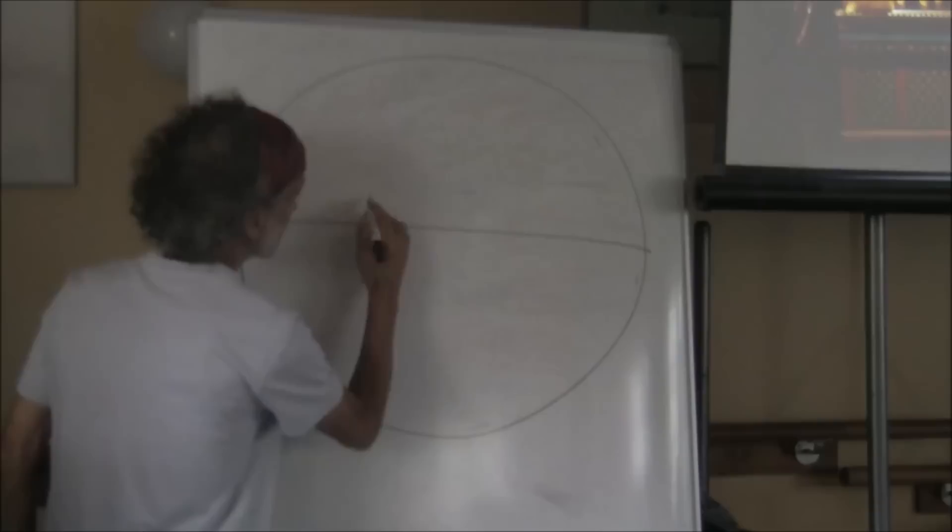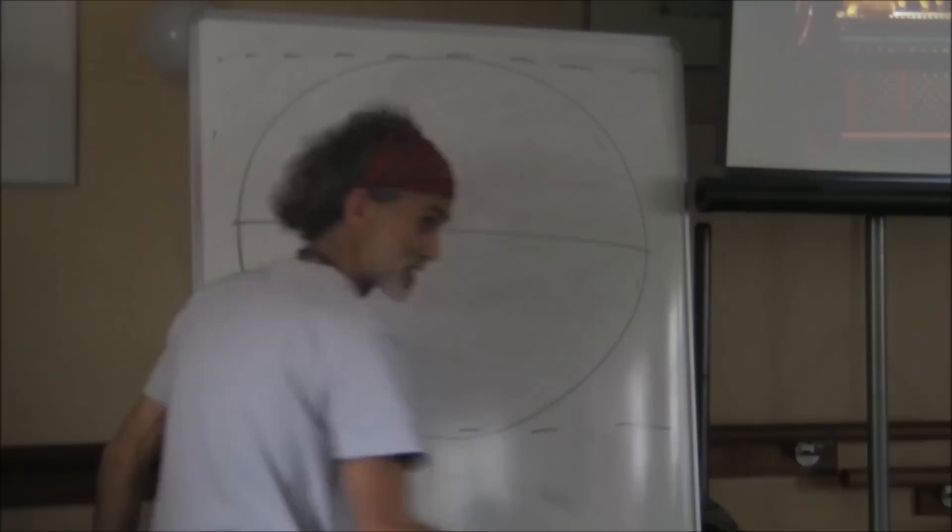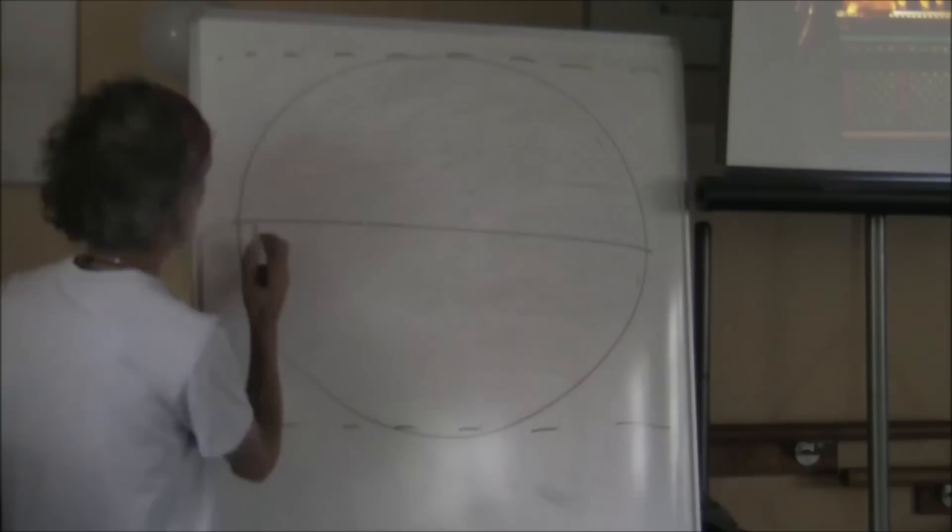Now what I'm doing is making this little circle here, remember the little circle, now it's big. Here is the Tropic of Cancer, here is the Tropic of Capricorn. Do you understand what I'm doing here? Everything is big now because I need to put more space in here.